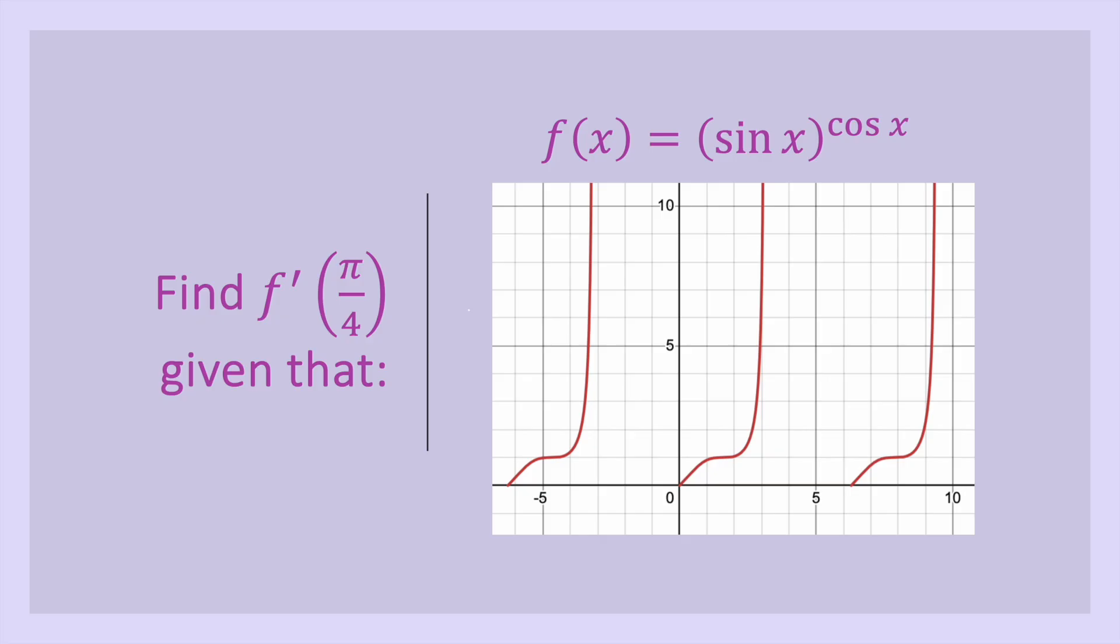So without further ado, I think infinity plus one says that all the time as well. Must be a maths teacher thing. Here is the function and we're gonna find its gradient. F of x equals sine x to the power of cosine x. The graph is given so you can estimate it and kind of know that your answer's in the ballpark. So pi over 4, if you can locate pi over 4 on the graph and estimate the slope.